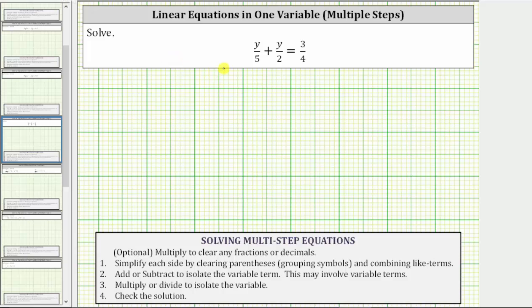We are asked to solve the given linear equation in one variable. To solve the linear equation, we need to determine the value of the variable that satisfies the equation or makes the equation true. To do this, we need to isolate y on one side of the equation.